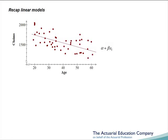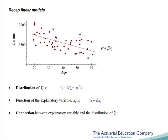When we were defining a linear model in CT3, we made an assumption about the distribution of the yi's, in this case the claim amounts. We assumed that they were normally distributed with mean mui and common variance sigma squared. The function of the explanatory variable, the xi's, is alpha plus beta xi. And we can see from the data points that only one of the yi's is actually on the line alpha plus beta xi. So what is the connection between the yi's, the claim amounts, and the explanatory variables, the xi's? Well, we assume that the mean claim amount lies on this line, and so individual results will be distributed around that with our variance of sigma squared.